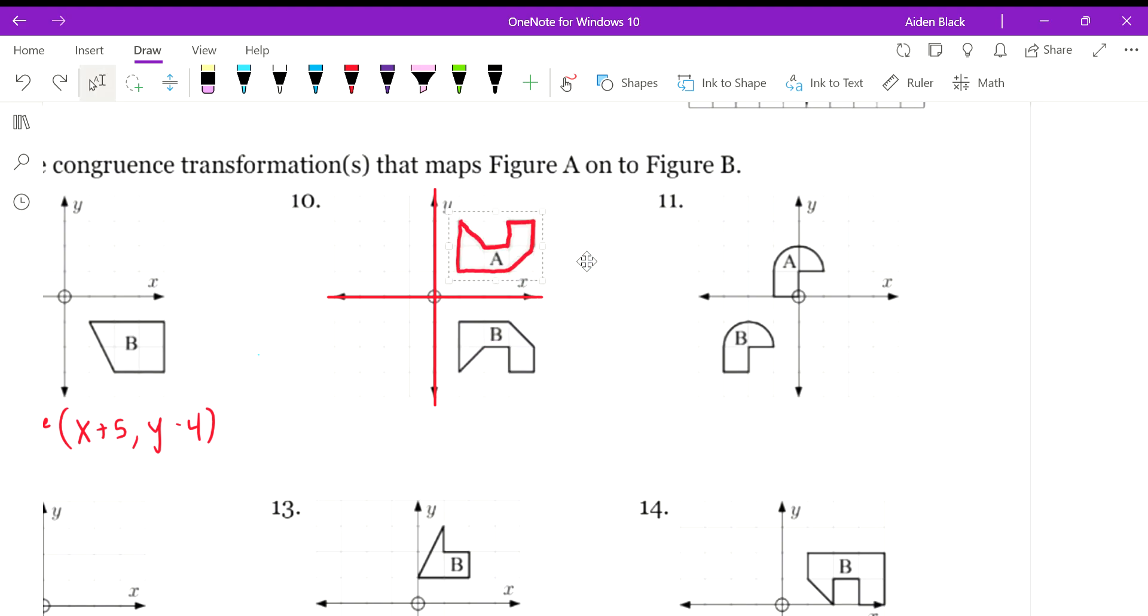If we translated it, I can basically just go like this. Does this translate? I'm just shifting it. Does this translate to be on top of it? Does it match up perfectly? No, it does not. So finally, I'm going to try our final option, which is reflection. Let's reflect it over the x-axis. Does it map? Good. So like I said, reflection over the x-axis.